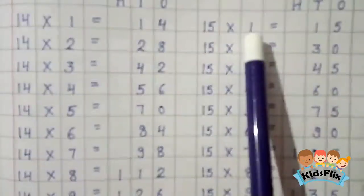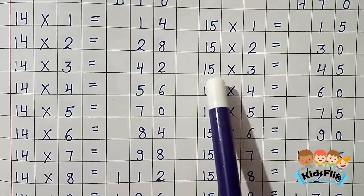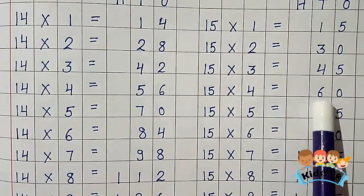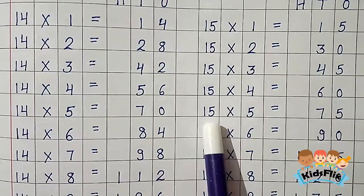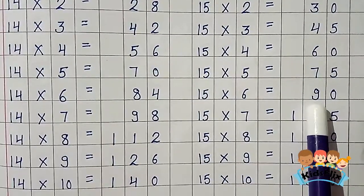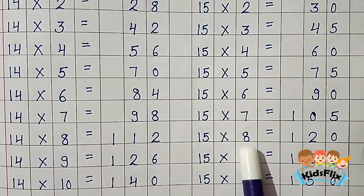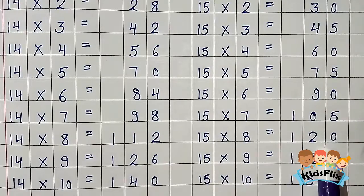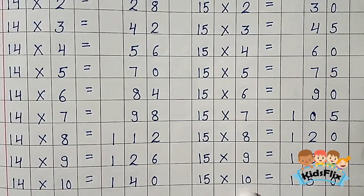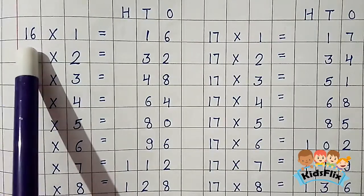15 1s are 15. 15 2s are 30. 15 3s are 45. 15 4s are 60. 15 5s are 75. 15 6s are 90. 15 7s are 105. 15 8s are 120. 15 9s are 135. 15 10s are 150. Now the table of 16.